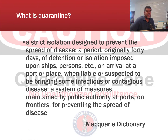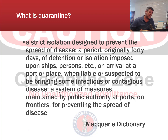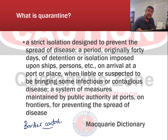The Macquarie Dictionary defines quarantine as a strict isolation designed to prevent the spread of disease — a period, originally 40 days (from the French derivative of this word) — of detention or isolation imposed on ships, persons, et cetera, on arrival at a port when liable or suspected of bringing in infectious or contagious diseases. A system of measures maintained by public authority at ports or frontiers for preventing the spread of disease. Basically, it's about border control.